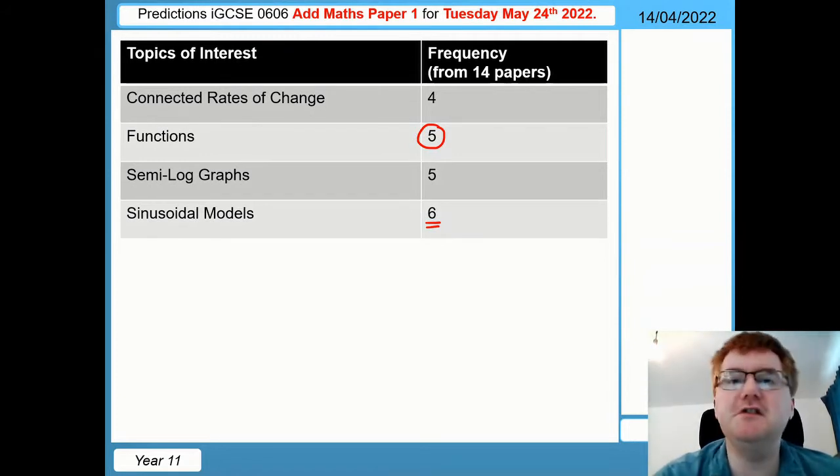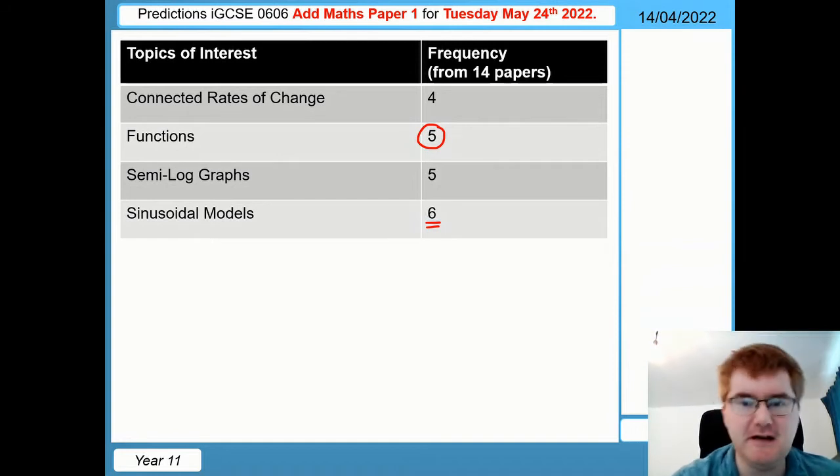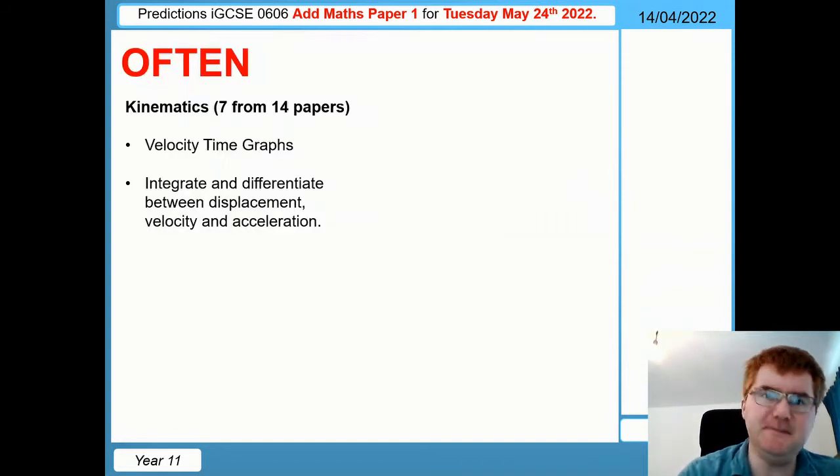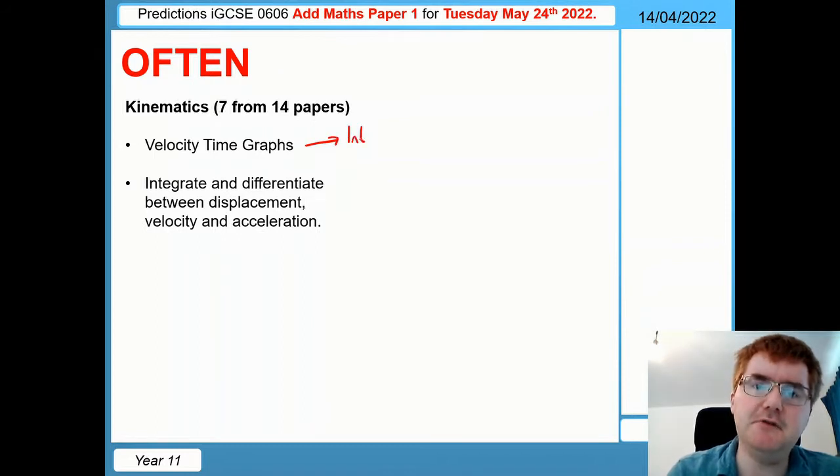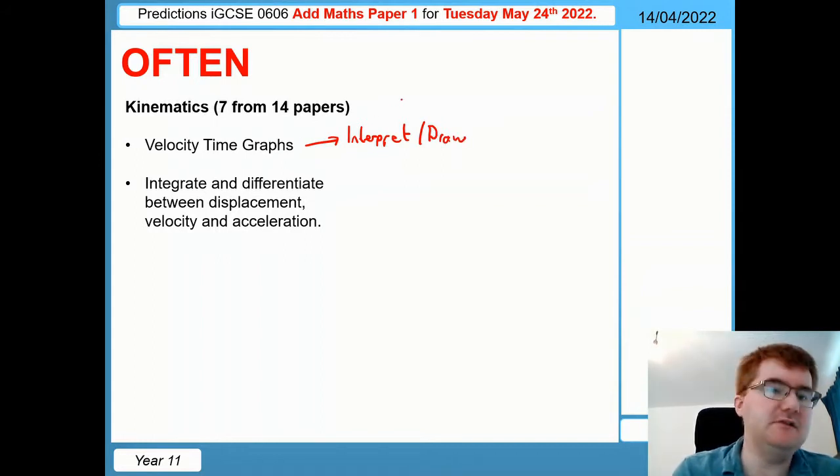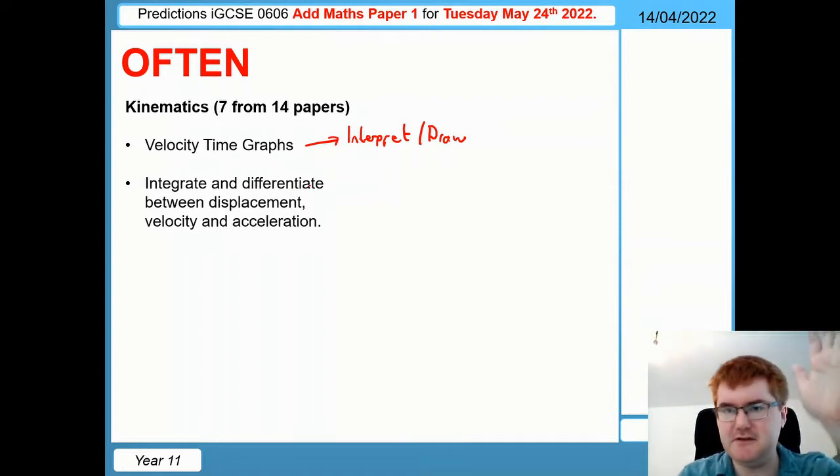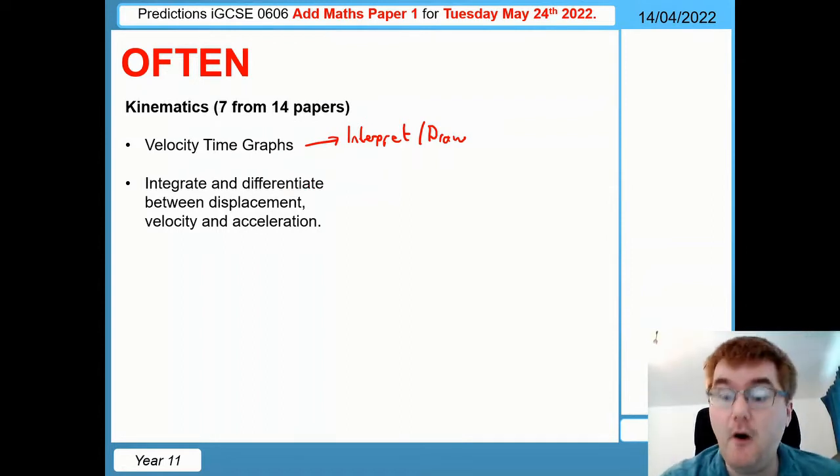I'd like to move on to the often topics and then into the almost certain category so you know which topics to revise. My first topic here is seven out of 14, so 50% on the last 14 papers. Velocity time graphs - you need to know how to interpret these and draw them as well. Be aware of what the velocity time graph looks like and how that relates to the displacement graph, and also how to integrate and differentiate between displacement, velocity and acceleration. Know that diagram of going between integrating and differentiating.